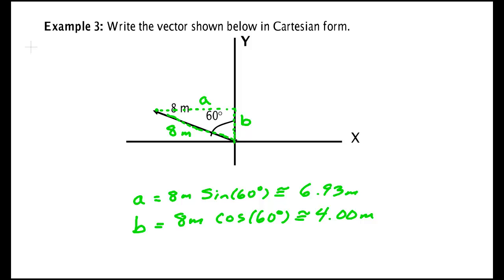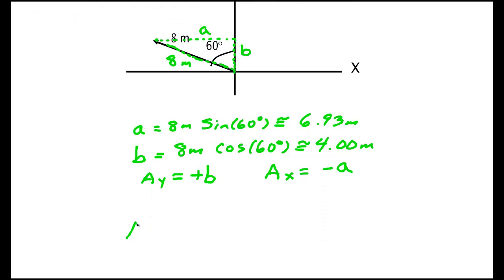And then I look. I see that the Y component is a positive B. Oops, my fault. Is a positive B. And the X component is this component here. That's the length A but it's going in the negative X direction, so it's minus A. So my vector would be minus 6.93 meters I hat plus 4.00 meters J hat.